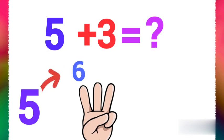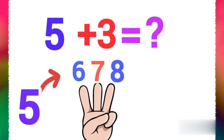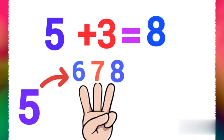5 plus 3 equals 8. Let's start with bigger number 5, and 3 fingers up. 6, 7, 8. 5 plus 3 equals 8.